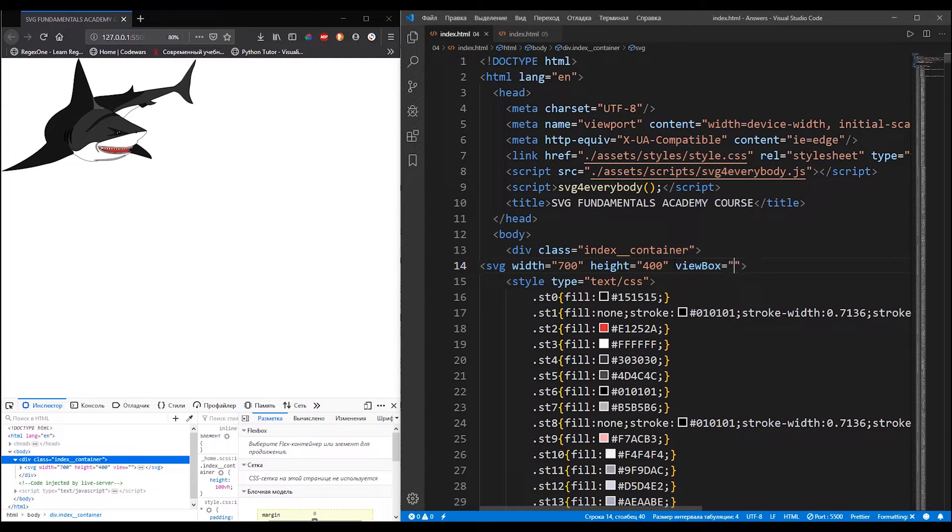When the viewbox attribute isn't set, then the user agent uses the default values that are equal to the x, y, width and height values of the viewport. And that means that the size of the viewbox and the size of the viewport are equal.